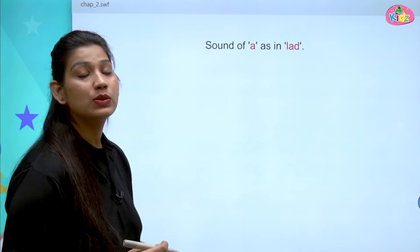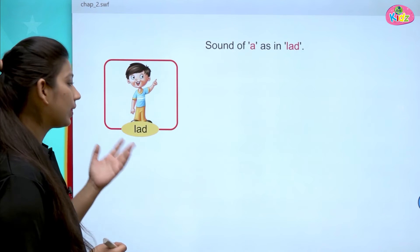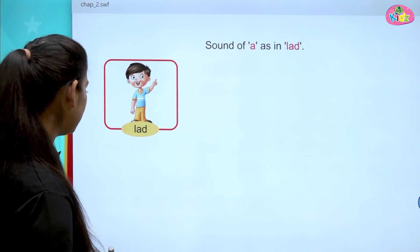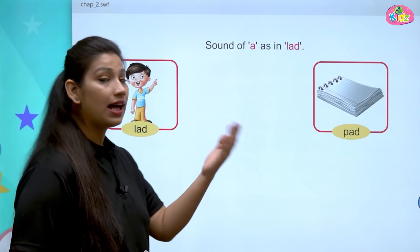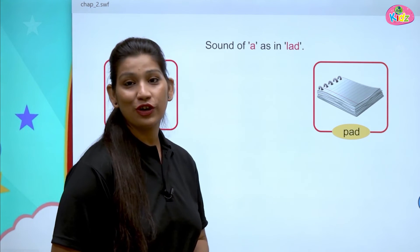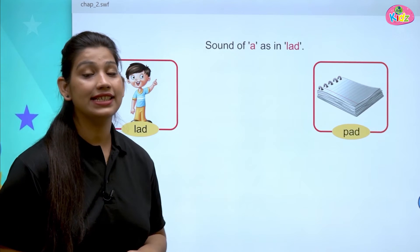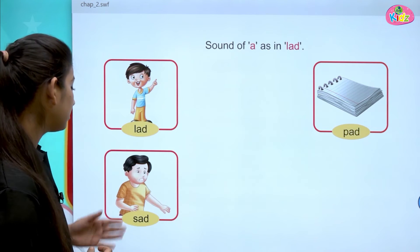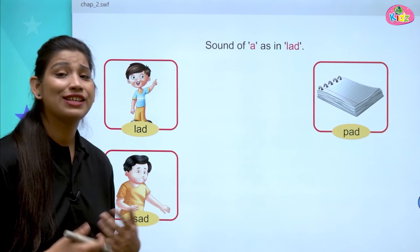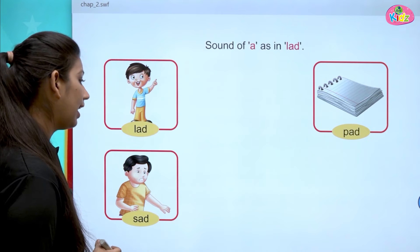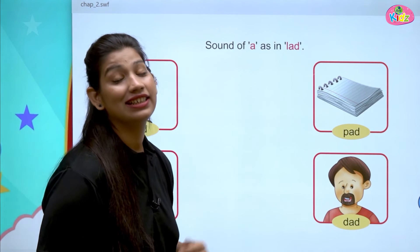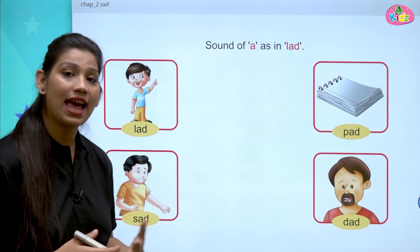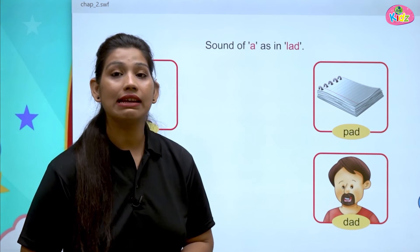Now we will understand the words with the AD sound. Here is a picture of Pad. P, A, D — Pad. P says P, A says A, D says D, which together becomes Pad. Next picture you can see is S, A, D — Sad. And the next picture is D, A, D — Dad. Here the D sound is repeating two times, and in the middle you can see the A sound. All of the words are with AD sound.